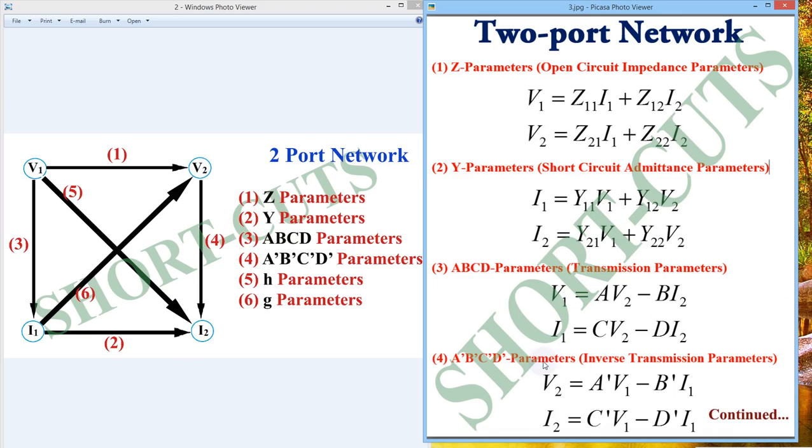Now let's see for inverse matrix, inverse transmission parameter. Here v2 and i2 will be coming in LHS hand side. So let's see v2 equal to A dash into v1 minus B dash, and minus is because of opposite you already know, v1 will come, B dash into i1. And i2 equal to C dash into v1 minus D dash into i1. So it's so simple.